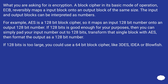What you are asking for is encryption. A block cipher in its basic mode of operation, ECB, reversibly maps an input block onto an output block of the same size. The input and output blocks can be interpreted as numbers. For example, AES is a 128-bit block cipher, so it maps an input 128-bit number onto an output 128-bit number. If 128 bits is good enough for your purposes, then you can simply pad your input number out to 128 bits, transform that single block with AES, then format the output as a 128-bit number. If 128 bits is too large, you could use a 64-bit block cipher like 3DES, IDEA, or Blowfish.